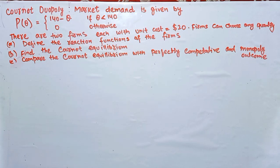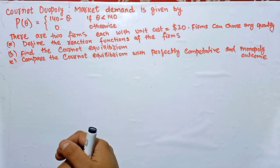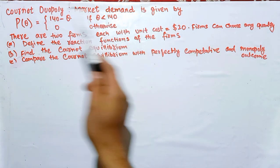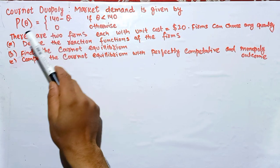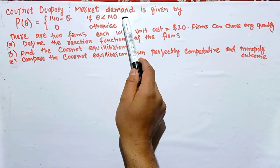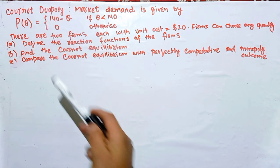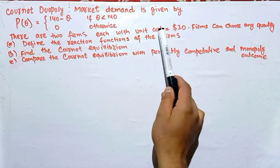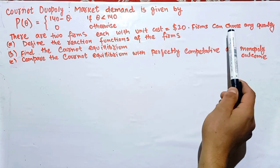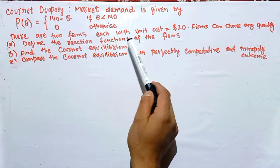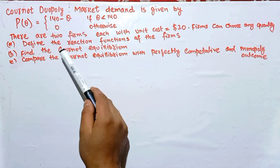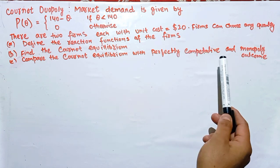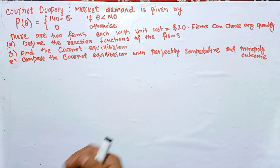Hi, this is Hilal. In this video on the mathematical economics series, we will try to solve a problem asked by a brother Siddharth, probably from Sri Lanka. The question involves market demand in a Cournot duopoly: P = 140 minus Q when Q is less than 140, and zero otherwise, where Q is the total output of the two firms. Each firm has a unit cost of 20, so marginal cost is 20. We need to define the reaction functions, find the Cournot equilibrium, and compare it with perfectly competitive and monopoly outcomes.